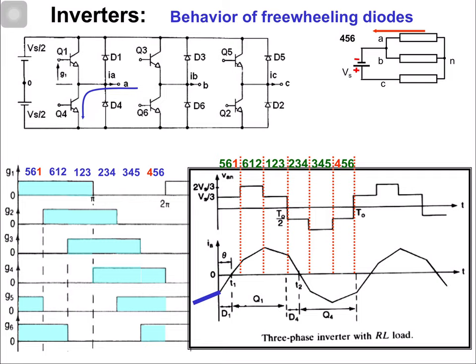The inductor does not allow abrupt changes in current — it resists the change. The current needs to flow in the same direction in the inductive load. The current was flowing when switch 4 was on. Now turning on switch 1, the current direction should remain the same but will be decreasing as the source and inductance act together, delivering the stored energy to other components.